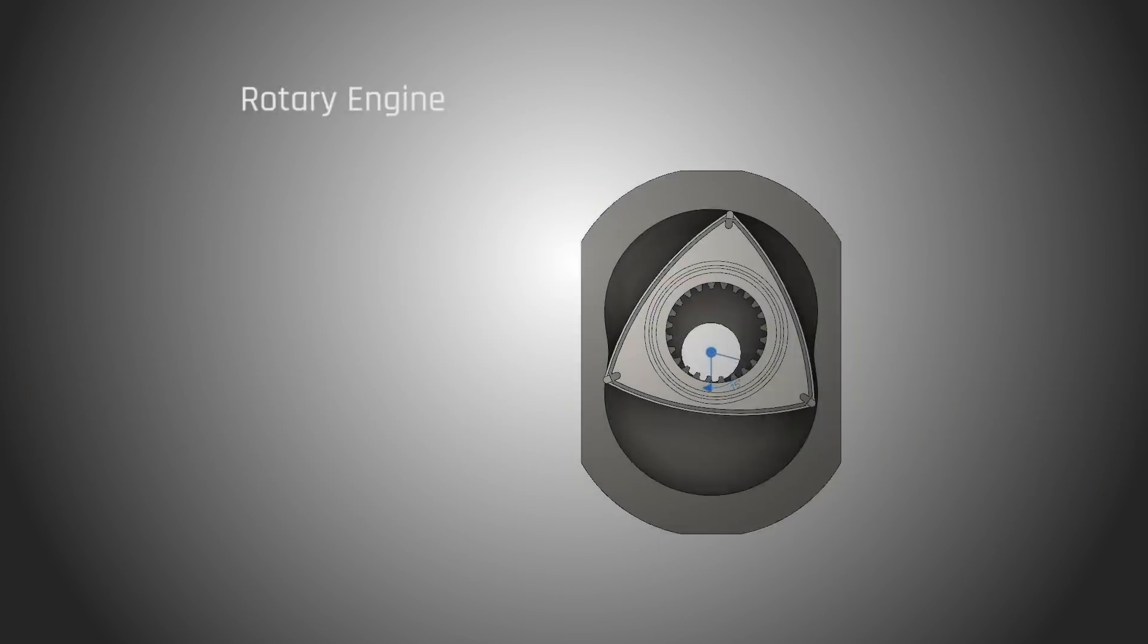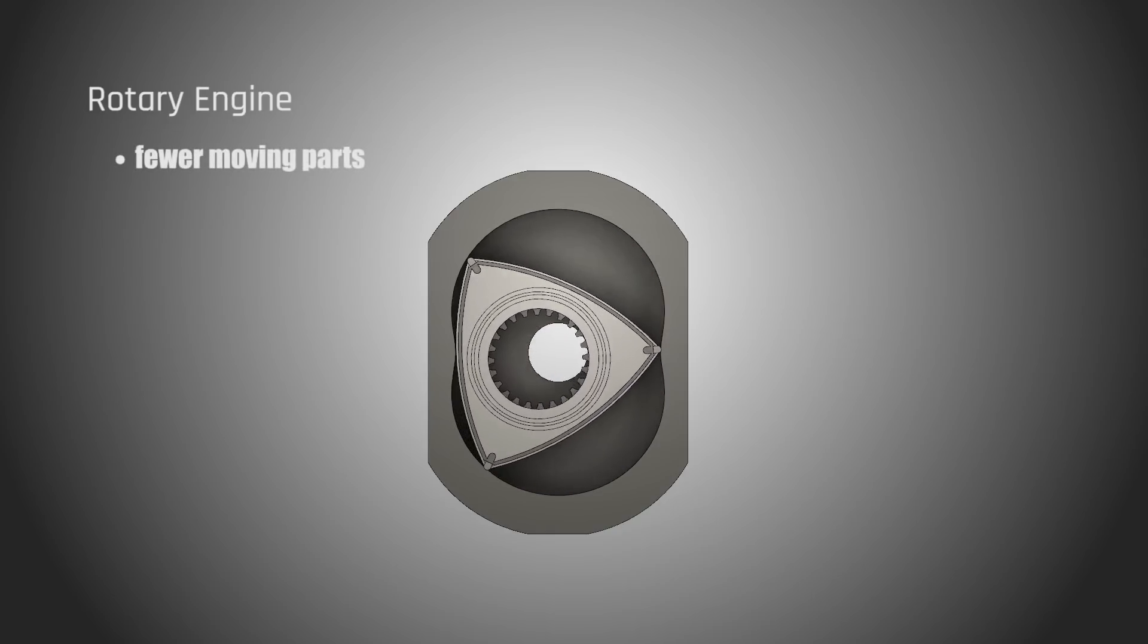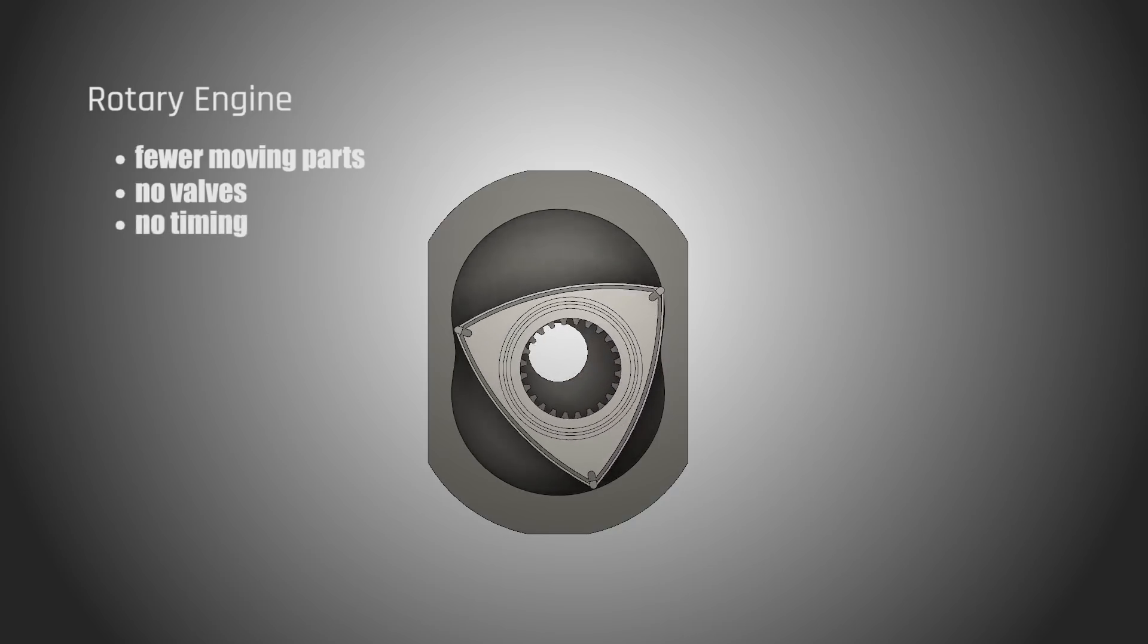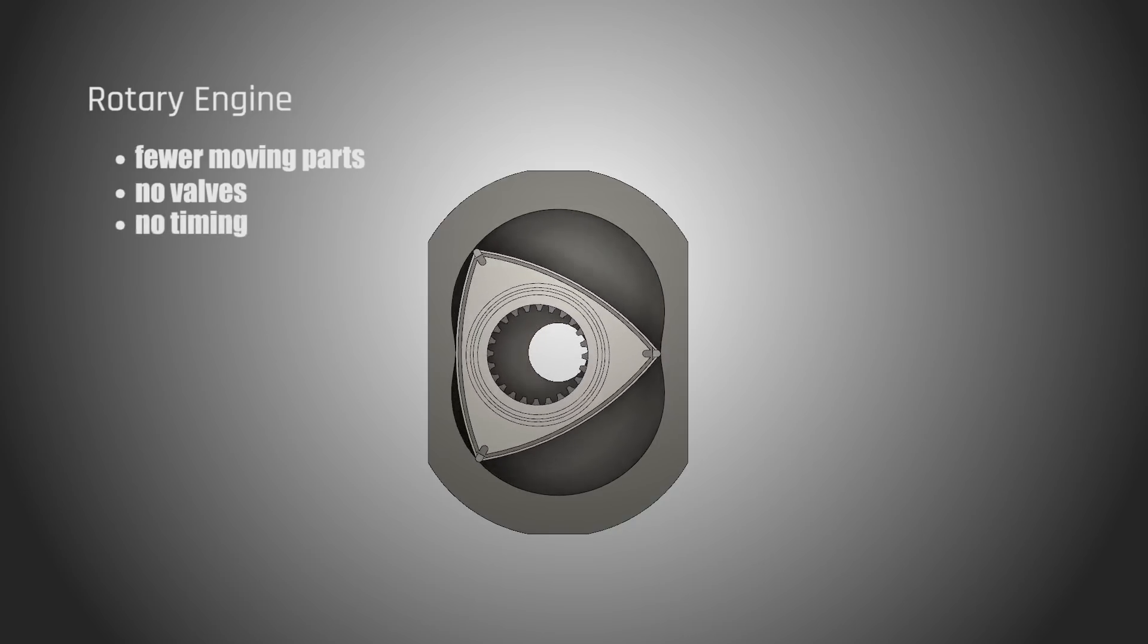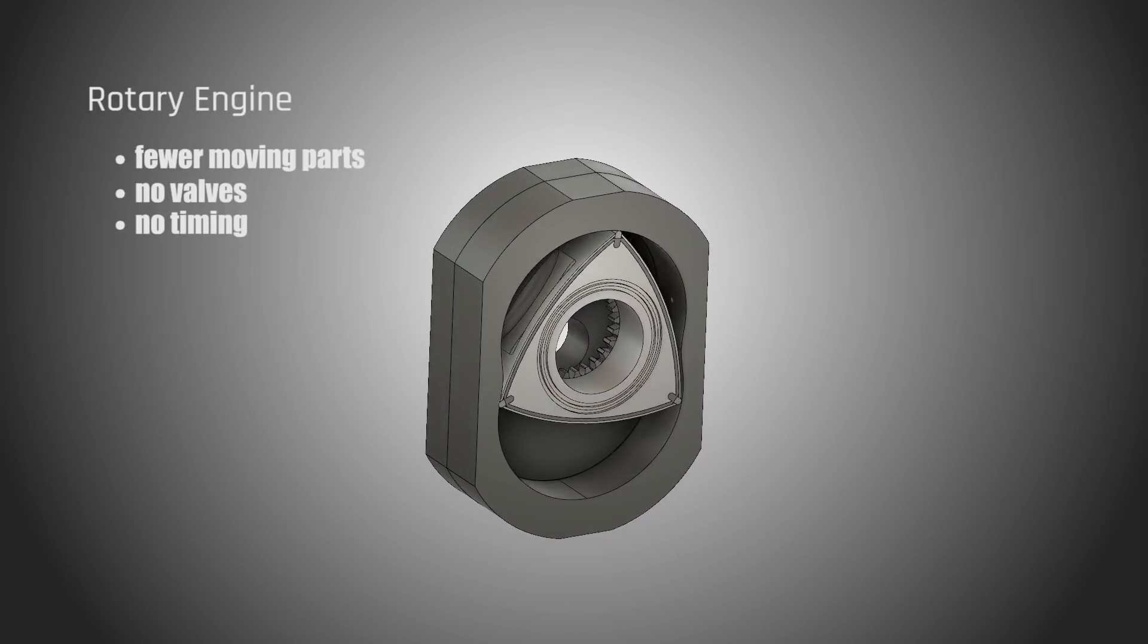What made the rotary engine so revolutionary was that it only uses really two main moving parts: the rotor and the eccentric shaft. Now we definitely aren't going to write a piston engine off the table. It's definitely something we'd like to get into later, but we've got to start somewhere, so may as well start with a rotary that's a little bit simpler.